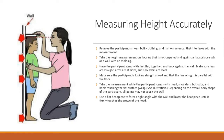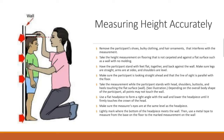Depending on the overall body shape of the participant, all points may not touch the wall. Use a flat headpiece to form a right angle with the wall and lower the headpiece until it firmly touches the crown of the head. Make sure the measurer's eyes are at the same level as the headpiece. Lightly mark where the bottom of the headpiece meets the wall, then use a metal tape to measure from the base on the floor to the marked measurement on the wall.